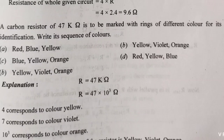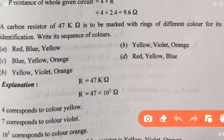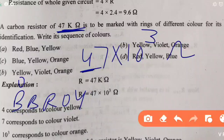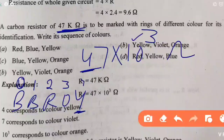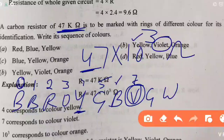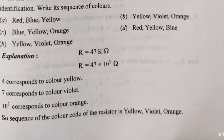Question 16: A carbon resistor of 47 kilohm. Kilo means multiply by 1000, so 47,000 ohm. Find the color ring sequence. Using BB Roy starting from 0: yellow = 4, violet = 7, orange = 3 (for multiplier 10³). First color is yellow, so option B is the right answer.